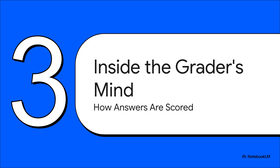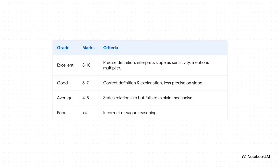Now for my favorite part — let's pull back the curtain and get inside the head of the person who's actually grading your paper. An average answer just says they're related. A good answer actually explains the connection. But to get that excellent score, you have to go one step further. You need to talk about the slope as being about sensitivity — how much income reacts to a change in interest rates. And of course, you drop that mention of the multiplier effect. That detail is what separates a good answer from a truly great one.